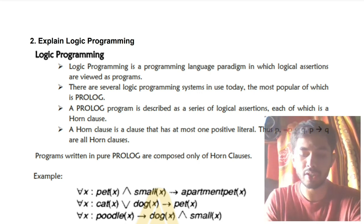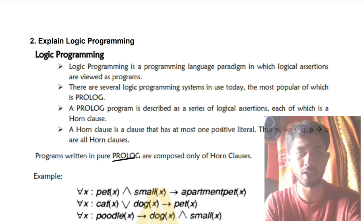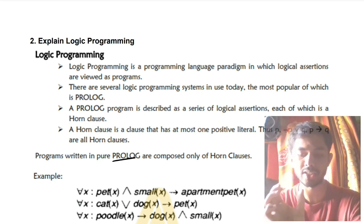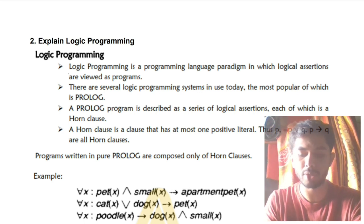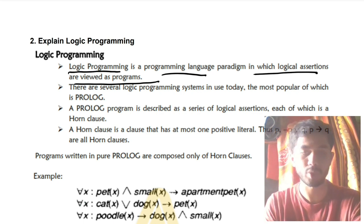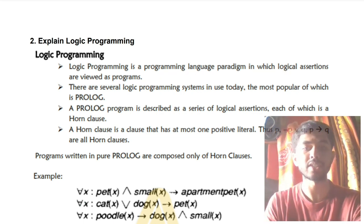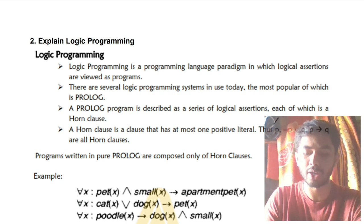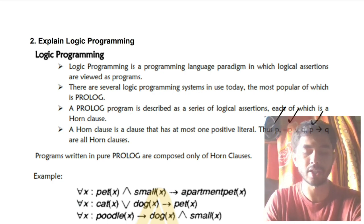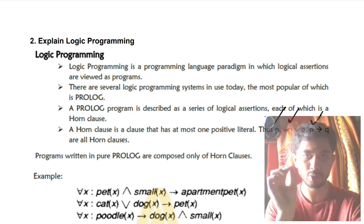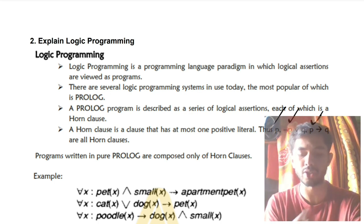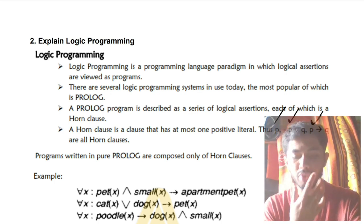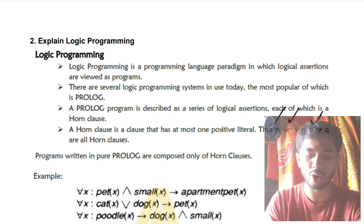The language used is called Prolog. Prolog uses logical assertions to reach a particular solution. The first point you have to write is: logic programming is a programming language paradigm in which logical assertions are viewed as programs. Logical assertions are logical statements like p, not p, p or q, p implies q — by using those you reach a particular solution.